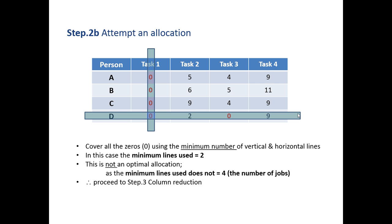This is not an optimal allocation. An optimal allocation is where you need as many lines as there are tasks - that is, four lines to cover your four tasks with the zeros. Here I've covered all the zeros with only two lines. That is not an optimal allocation.